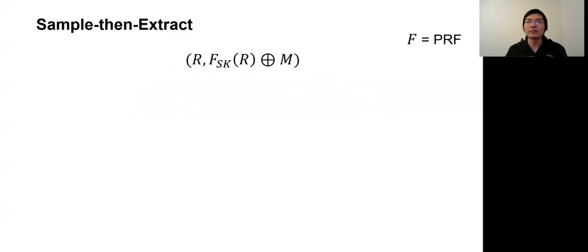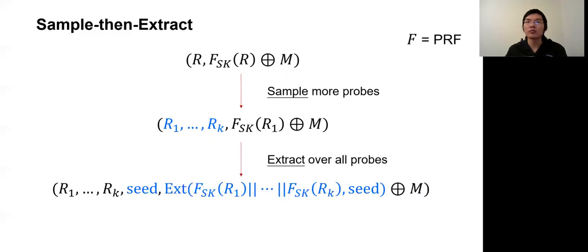We start with the construction of ST scheme. ST can be regarded as a generalization of counter-mode encryption. First, instead of sampling one random R, we sample k random values R1 to RK, which we are going to refer to as probes in the following. Then we evaluate the K probes in the function F, concatenate the results and apply an extractor to obtain a mask for the plaintext. The ciphertext is composed of the K probes R1 to RK, the seed of the extractor, and the masked plaintext. Here, specifically, to get the tight bound, we choose a two-universal hash function as the extractor. The complexity of the scheme depends on the parameter K, and we expect that the security of the scheme will increase as K increases. But the main challenge is to understand quantitatively how.